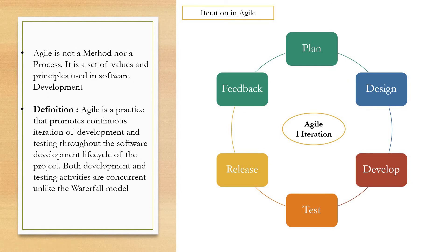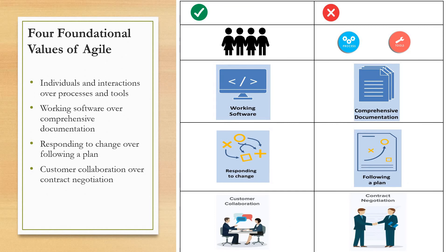Now let us go through the fundamental values and principles of Agile. The four fundamental values of Agile are: 1. Individuals and interactions over processes and tools — individuals and interactions are given more preference. 2. Working software is given more preference than comprehensive documentation. 3. Responding to change is given more preference than just following a plan. 4. Customer collaboration frequently is given more preference than just negotiating a contract.